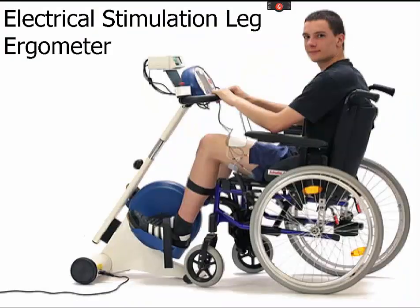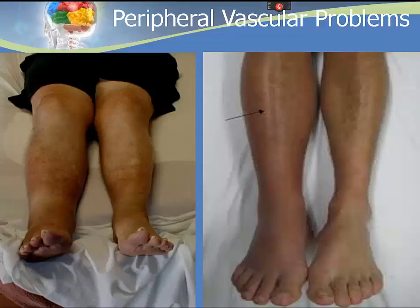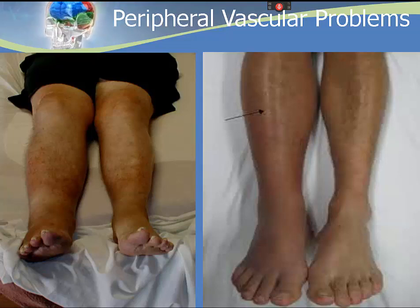An electrical stimulation leg ergometer is used with persons with spinal cord injury because they face the challenge of maintaining cardiovascular fitness despite limited mobility. This FDA-approved device provides benefits including improved range of motion, relaxes spasms, minimizes atrophy, and improves blood circulation. Peripheral vascular problems like DVTs and pulmonary embolisms are the leading cause of death.